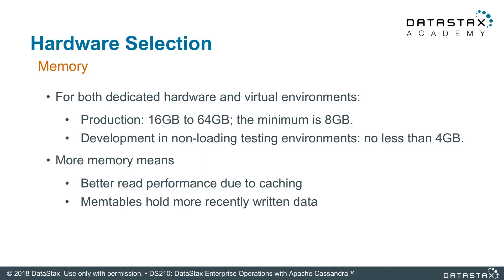When it comes to memory, more is obviously better. We don't allocate all the memory to the Apache Cassandra process, but the kernel will use the memory for caching. A minimum of 16 gigs is recommended for production, though you can get by with a little less for development machines.